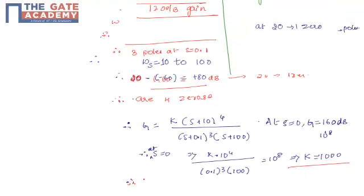In order to obtain the options, we can see from the options that it is in terms of 10. So this equation has to be divided with 0.1. We will obtain 10^6 times (s + 10) divided by (10s + 1)^3 times (s + 100). This is option A.